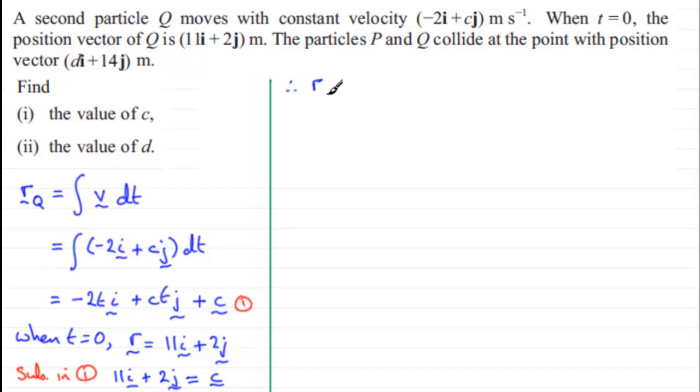the position vector of Q, RQ, is going to equal minus 2t plus 11 in the i direction. I'll write that as 11 minus 2t in the i direction. And then we've got for the j components, we've got ct and then plus 2. So we'll write that as plus ct plus 2 in the j direction.